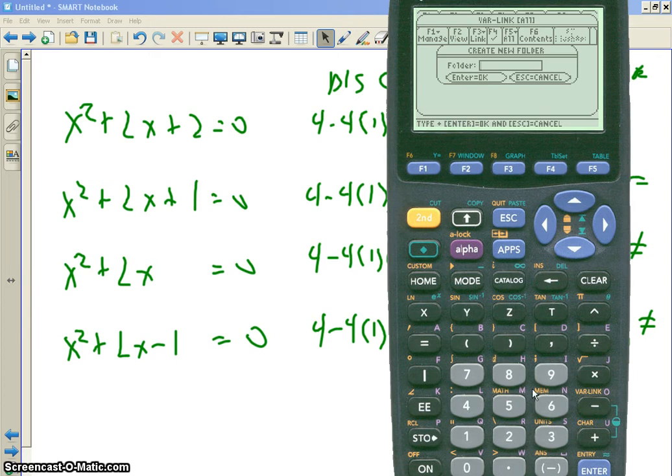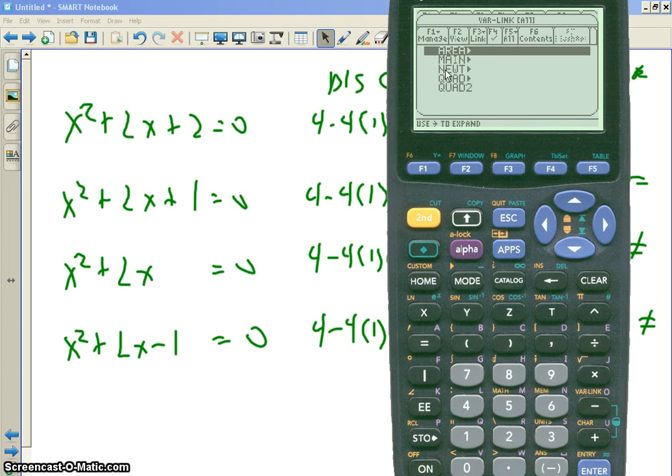And I'm going to call it quad 2. So let's see. Where is Q? U. I'm in alpha mode already. I don't have the alpha. A. D. I already have quad, so I'm going to call it quad 2. Now I'm in alpha mode, so I'll turn off alpha to get the 2. Hit enter. Hit enter twice to make it stick. Now you have a new folder.